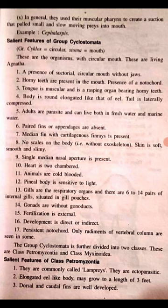The second group is Cyclostomata. Cyclo means circular and stoma means mouth. Cyclostomata means organisms with a circular type of mouth. This group is nomenclated as Cyclostomata — organisms with a circular mouth. These are the living Agnatha.